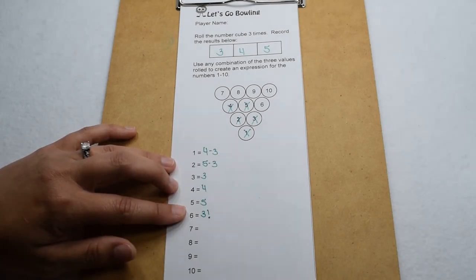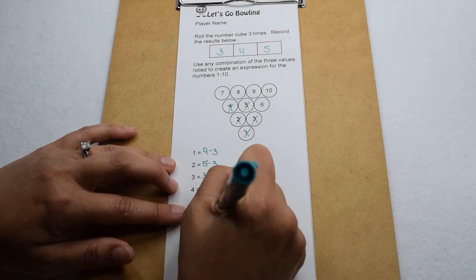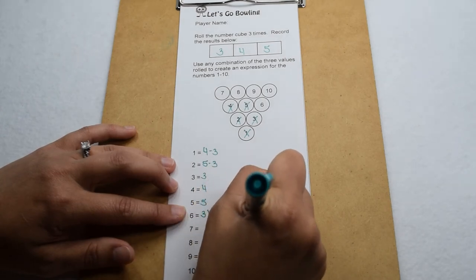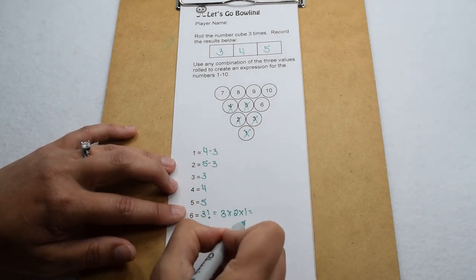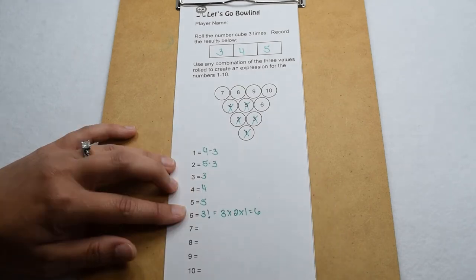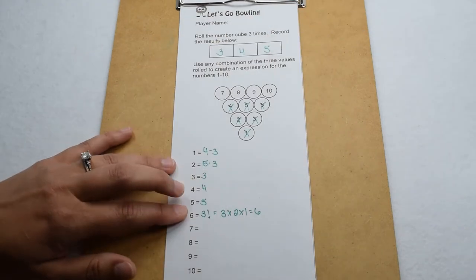We're going to find three factorial to give us six. Three factorial means I can do three times two times one. Three times two is six, six times one is six, so there's my six, and we can knock down that pin.